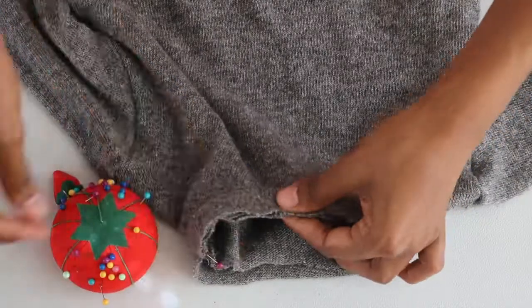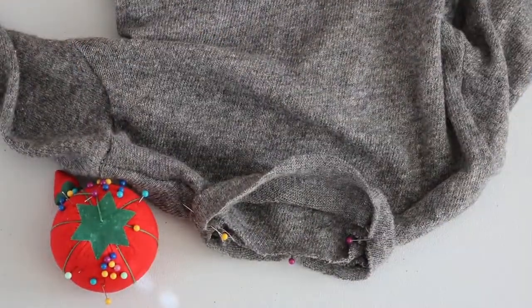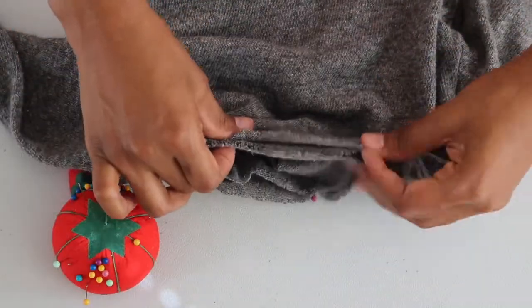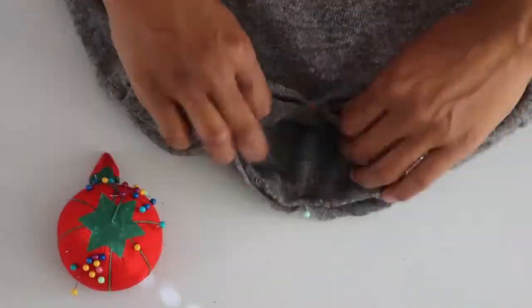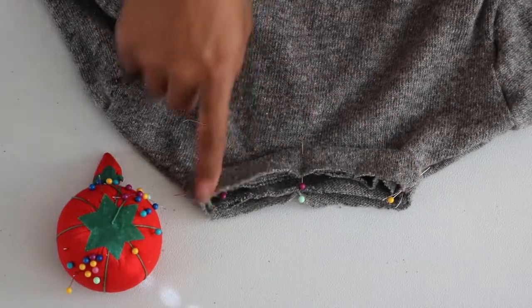Then pinned those together. From there I went ahead and pinned around the collar, making sure that the band was folded in half and lined it as neatly as I could along with the line of the collar. And that's ready to sew.